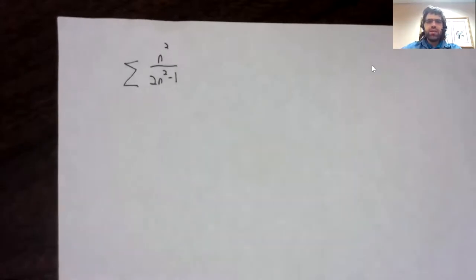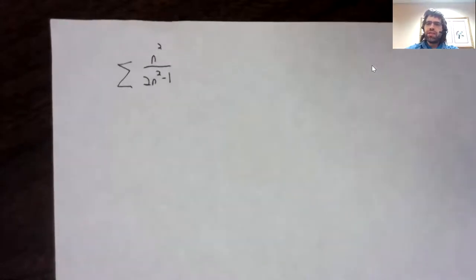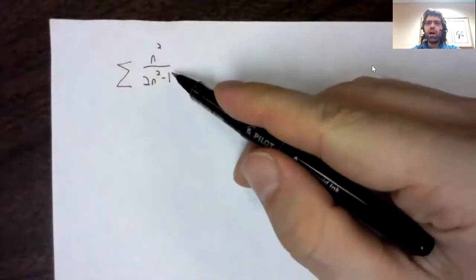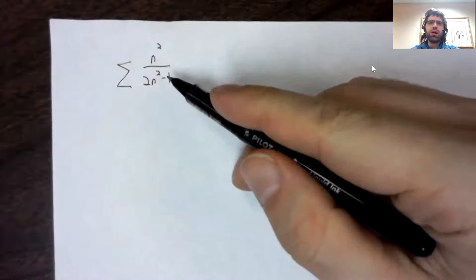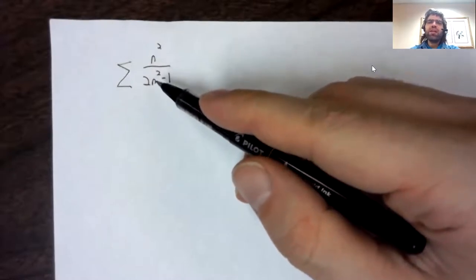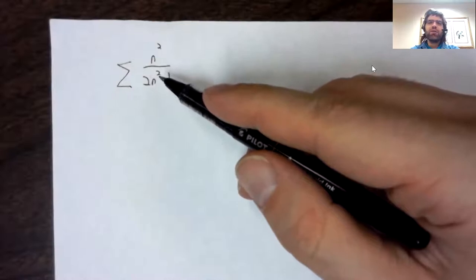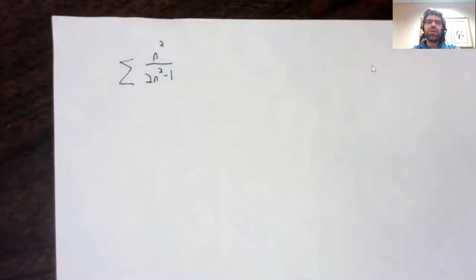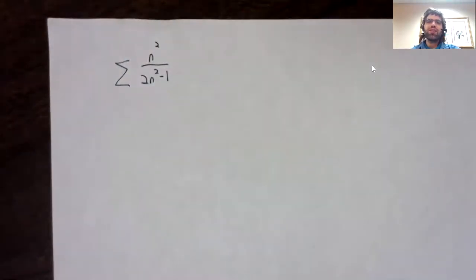When n is even a modestly large, this negative one might as well not be here. Like if you have a b of n squared minus one, or a b of n squared, those are basically the same number.